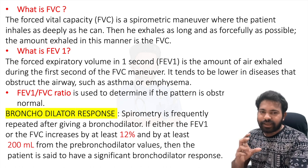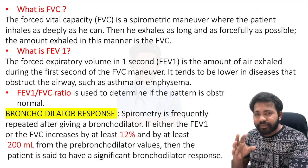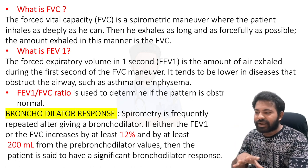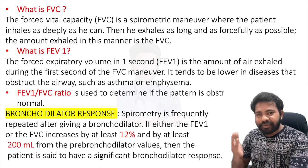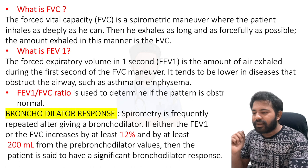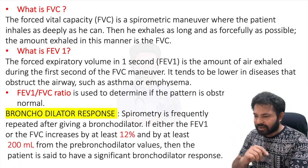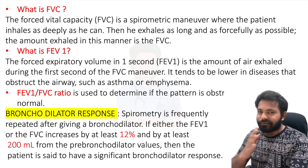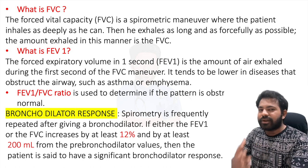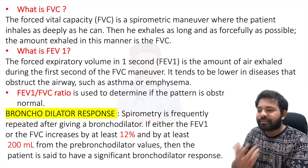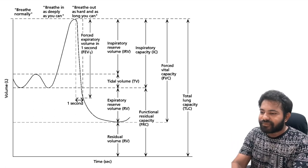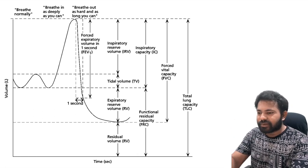In spirometry, the test is repeated after administering a bronchodilator. If either FEV1 or FVC increases by at least 12 percent or by at least 200 ml from pre-bronchodilator to post-bronchodilator levels, the patient is said to have a significant bronchodilator response. This means that if the patient develops bronchospasm intraoperatively, giving a bronchodilator will help relieve the spasm — which is a good prognostic sign.